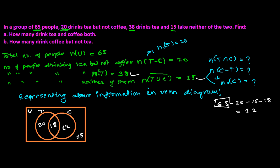Now from the Venn diagram we can answer both questions. First, how many people drink tea as well as coffee? From the Venn diagram, there are 18 people in the intersection — so the answer is 18. Second, how many drink coffee but not tea? That is the coffee-only region, which is 12.